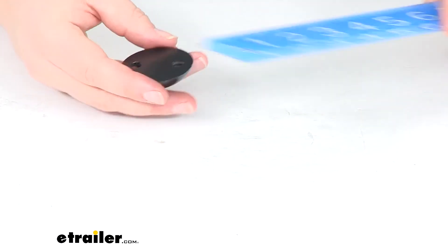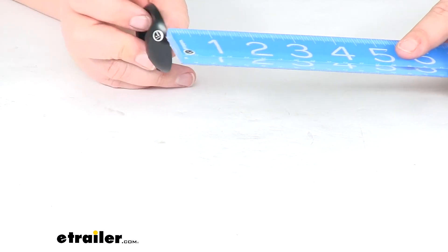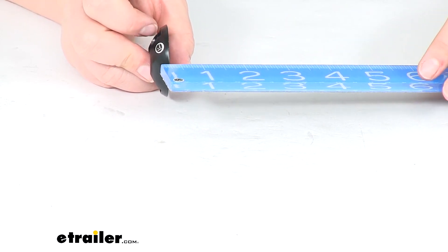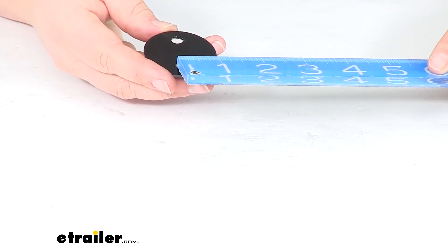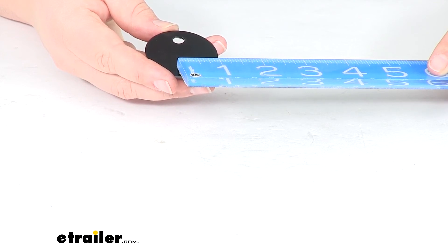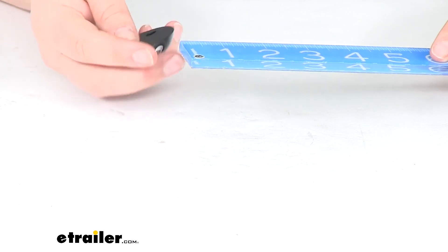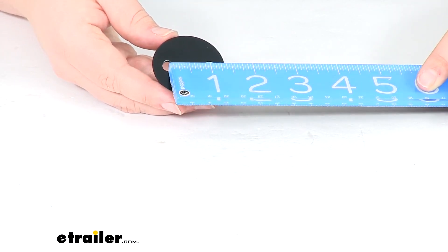As far as the size, it's about one and three quarter inches in diameter by about seven sixteenths or just under a half inch tall. Those mounting holes are about five sixteenths of an inch in diameter, and they're spaced about an inch apart, center to center.